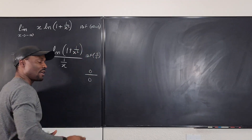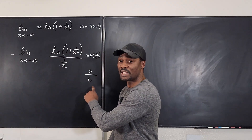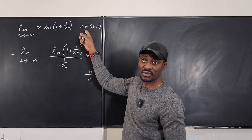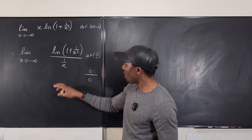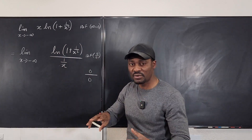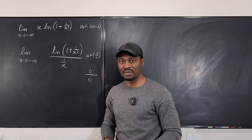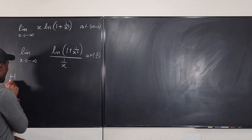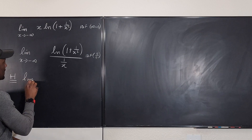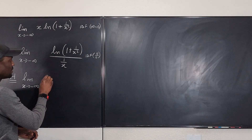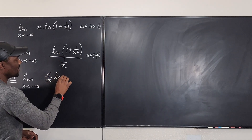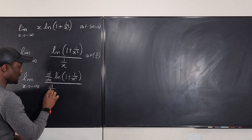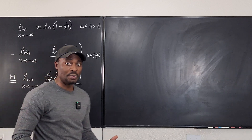The good thing about the zero over zero indeterminate form is you can now use L'Hôpital's rule, because this is the condition for L'Hôpital's rule. Now that we have this, let's take the derivative of the top function and the derivative of the bottom function, and whatever we get, we clean up and try to take the limit. By L'Hôpital's rule — we use the symbol H — we have the limit as x goes to negative infinity of d/dx of the natural log of 1 plus 1 over x squared, divided by d/dx of 1 over x.